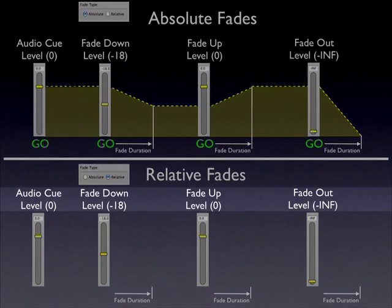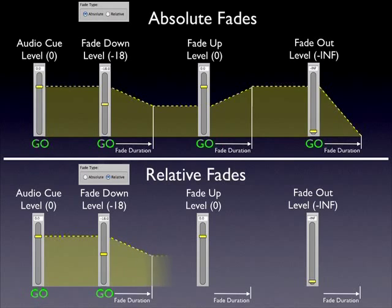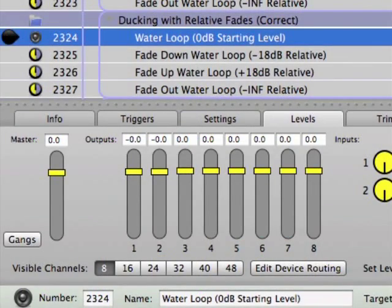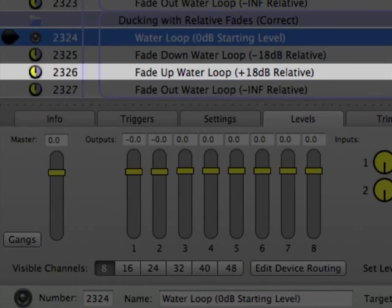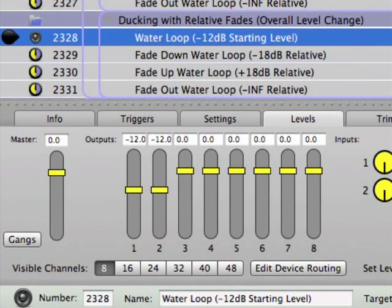This exact sequence of values is used in cues 2320 to 2323, but the outcome is very different because the fade cue types are set to relative. The levels in 2320 begin at 0 dB, cue 2321 adjusts the levels down by -18 dB, but cue 2322 adjusts the levels by 0 dB — which will not change the levels at all. Therefore the level stays at -18 dB until the next cue fades it out completely. Cues 2324 to 2327 use relative fades correctly, bringing levels down by -18 dB and then back up by +18 dB before fading out.